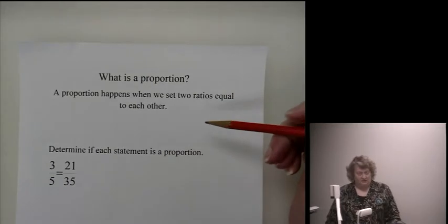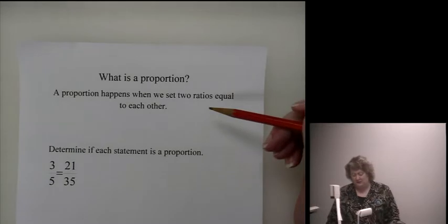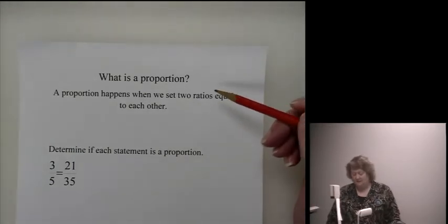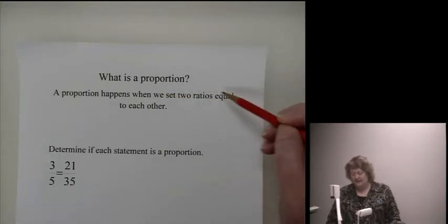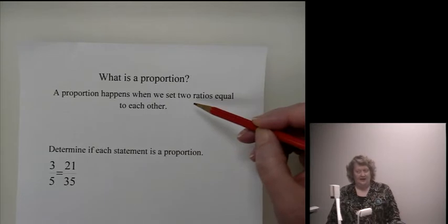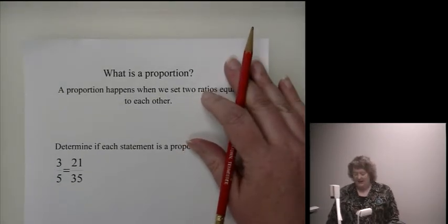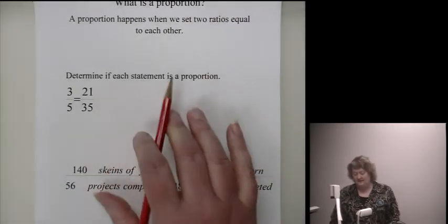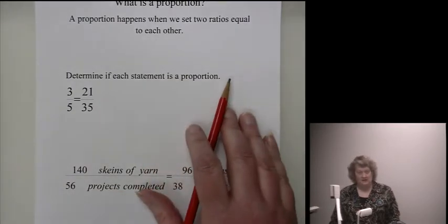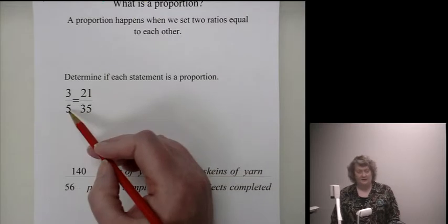What is a proportion? As a quick review, and again I'm not giving the full lecture on proportions, you really do need to have been to class for that. A proportion happens when we set two ratios equal to each other. One of the things that your homework will ask you to do is to determine if a statement is a proportion. It's a proportion if the two values are equal.